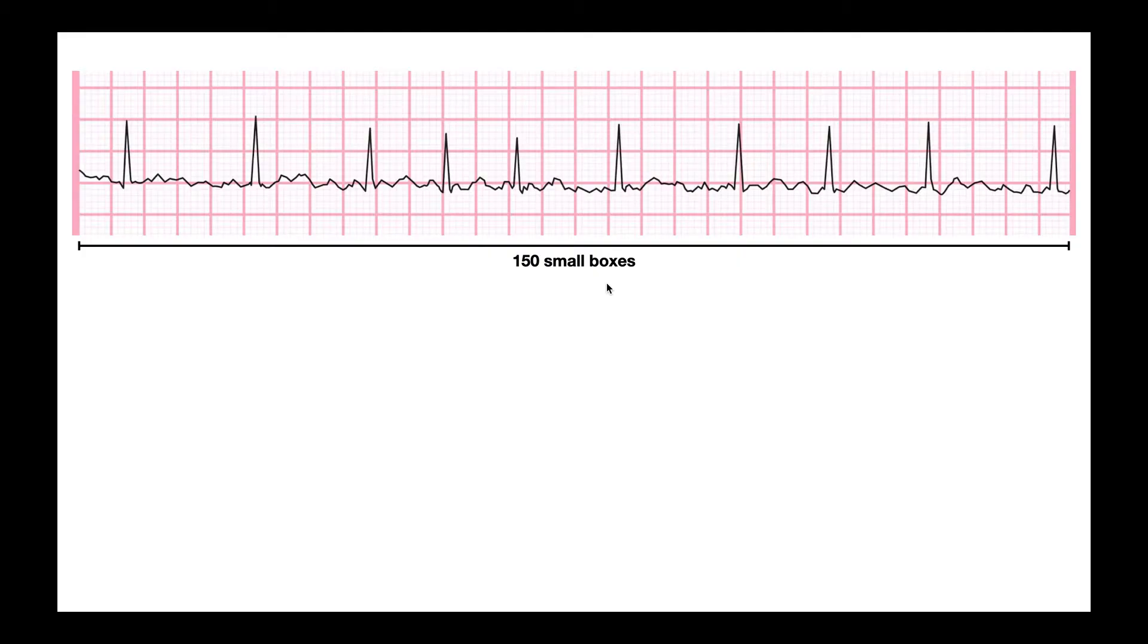The reason I mention that is because if you take 150 small boxes and multiply times 0.04 seconds, which is the time interval associated with each of the small boxes, you get 6 seconds. Remember, each small box is worth 0.04 seconds. So if there's 150 small boxes and each is worth 0.04 seconds, the entire length of this EKG strip is 6 seconds.